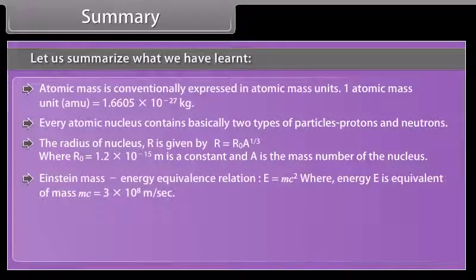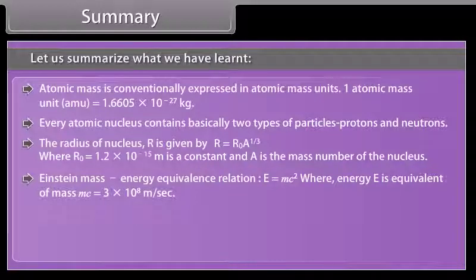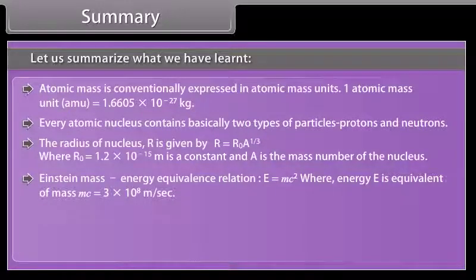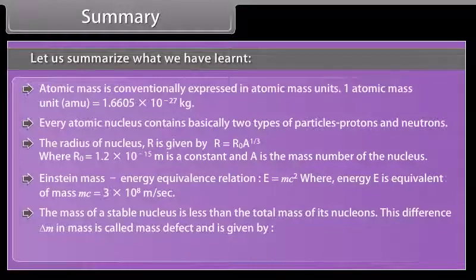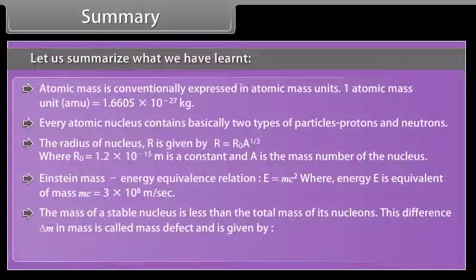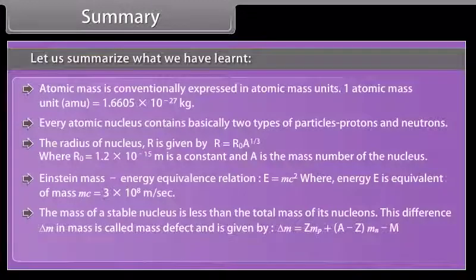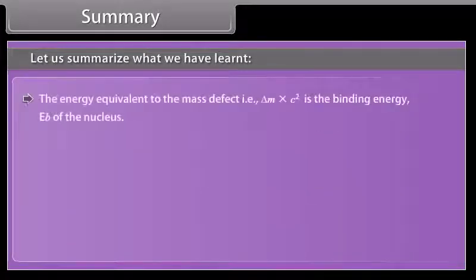Einstein mass energy equivalence relation, where energy E is equivalent of mass m. C is the velocity of light in vacuum, that is 3 into 10 raised to the power 8 meter per second. The mass of a stable nucleus is less than the total mass of its nucleons. This difference delta m in mass is called mass defect. The energy equivalent to the mass defect, that is delta m times C square, is the binding energy Eb of the nucleus.